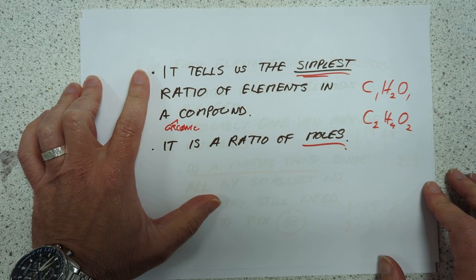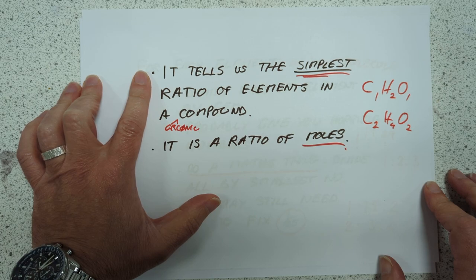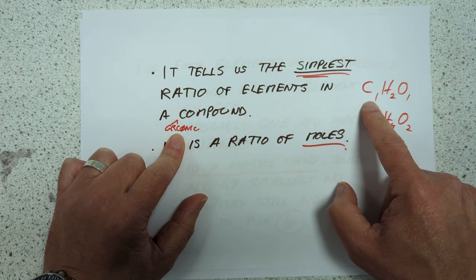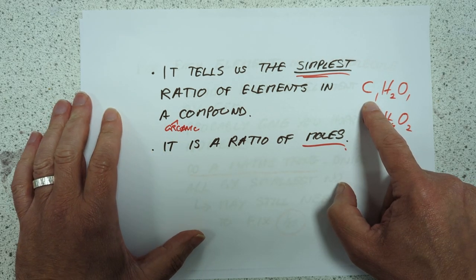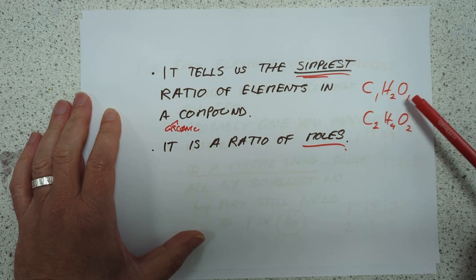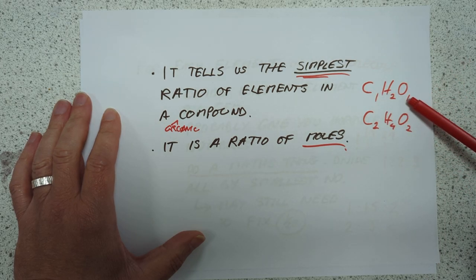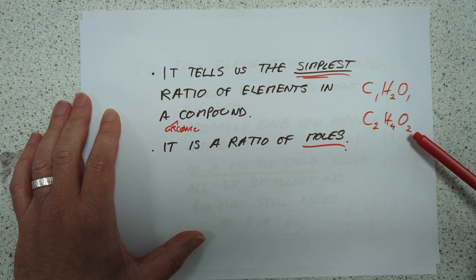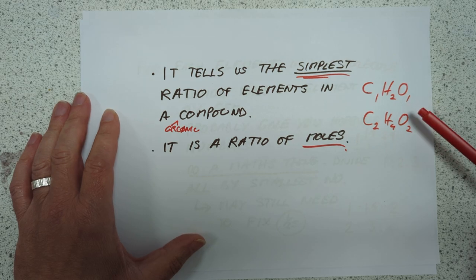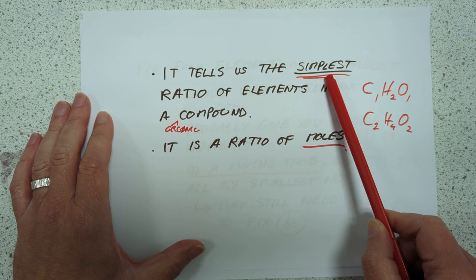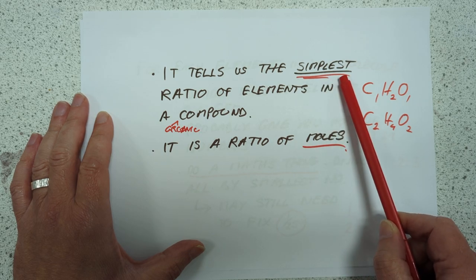What does it tell us? An empirical formula tells you the simplest ratio of elements in an organic compound. For example, if you do the empirical formula calculation and you end up with C1H2O1, that could be the formula, or it could be a multiple thereof, so it could be 2, 4 and 2. I suppose it could be 3, 6 and 3 as well. So just bear in mind that the empirical formula is the simplest one, not necessarily the actual one. You might need to multiply it up.